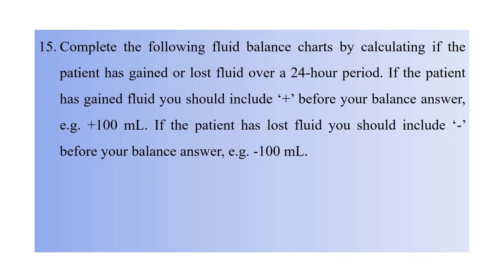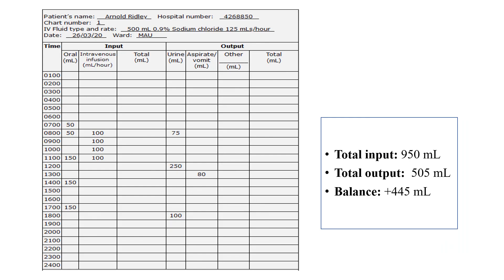Question fifteen: complete the fluid balance chart by calculating whether the patient has gained or lost fluid over a 24-hour period. If the patient has gained fluid, include a plus sign before the balance — for example, plus 100 mL. If lost, include a minus sign — for example, minus 100 mL. First calculate all inputs: the total input is 950 mL. Then add all outputs: the total output is 505 mL. Subtract 505 from 950 — as input is more than output, you get a positive balance, so include the plus sign before the number.